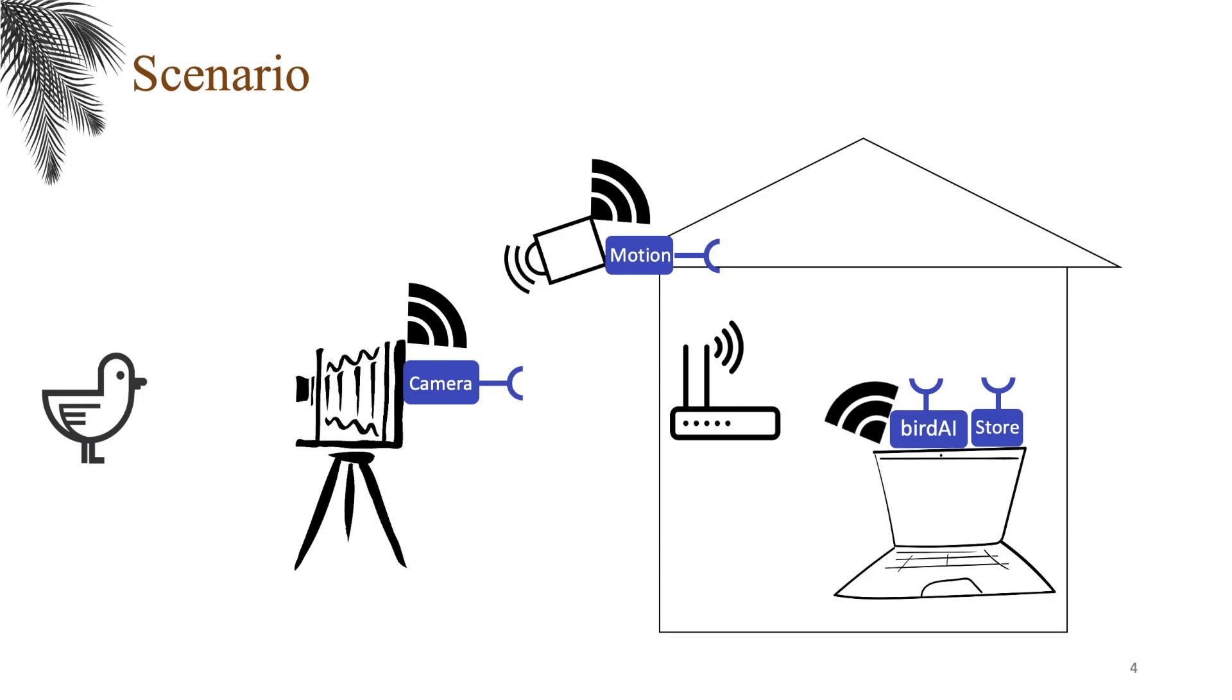We want the system to work the following way. When we detect motion in the garden, the camera takes a photo and if the photo contains a bird according to the artificial intelligence, it is stored on the laptop.